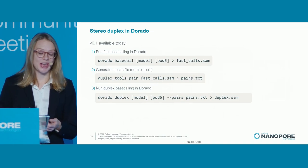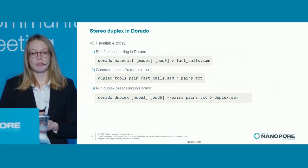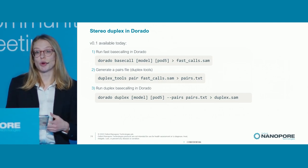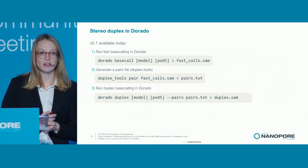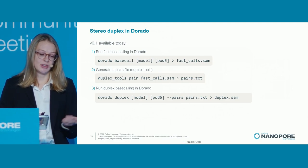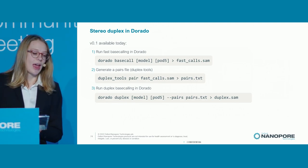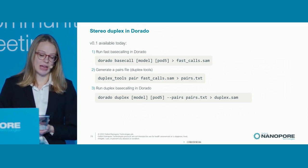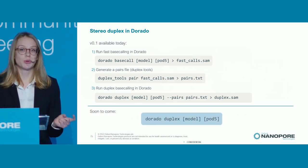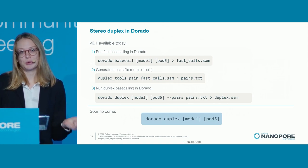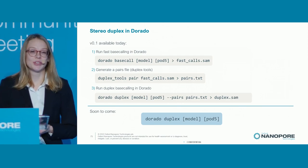If you want to try this out today, you can. We have stereo duplex, an initial first version, available in Dorado. The design of Dorado enabled us to bring this from a research proof of concept to a product you can use in less than a month. Right now there's one additional precursor step — generating a file of candidate read ID pairs, this pairs.txt file. Our suggested approach is to run an initial fast base call in Dorado and then generate a pairs file using duplex tools, a package we have available. Very soon we hope to incorporate this entire pairing process within Dorado, so there'll be one simple command to take you from POD5 files and your choice of simplex model to duplex base calls. We also anticipate future speed and memory performance improvements to come with stereo.